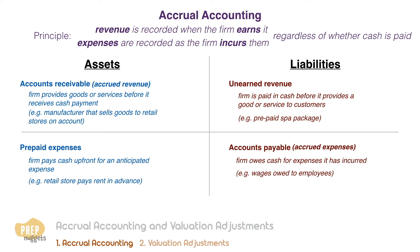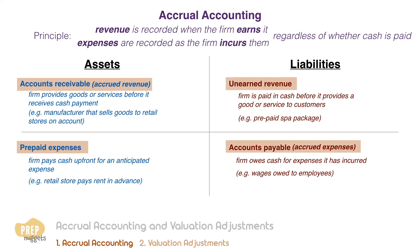It's also important to differentiate which accounts are assets and which are liabilities. In terms of future economic benefits, accrued revenue and prepaid expenses bring future benefits to the firm and are therefore classified as assets. Unearned revenue and accrued expenses represent expected future economic losses to the firm and are therefore classified as liabilities.